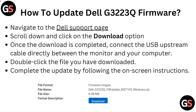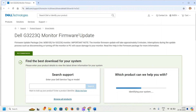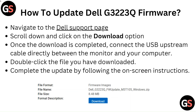How to update Dell G3223Q firmware: navigate to the Dell Support page, scroll down and click on the Download option. Once the download is completed, connect the USB upstream cable directly between the monitor and your computer. Double-click the file you have downloaded and complete the update by following the on-screen instructions.